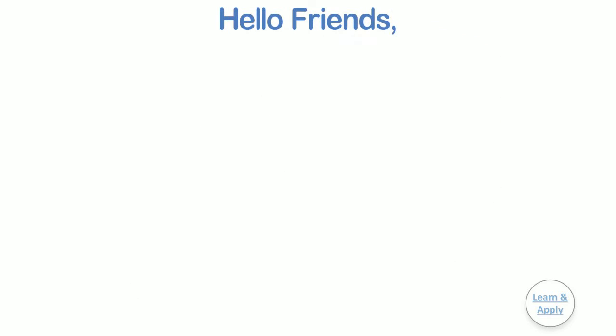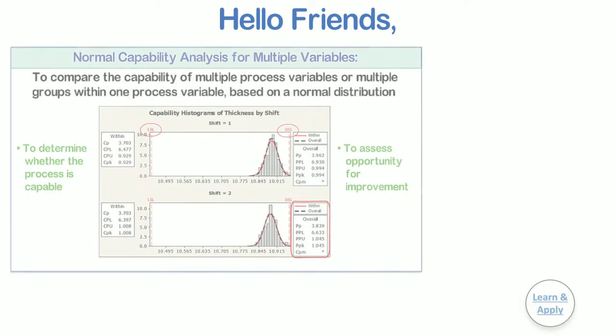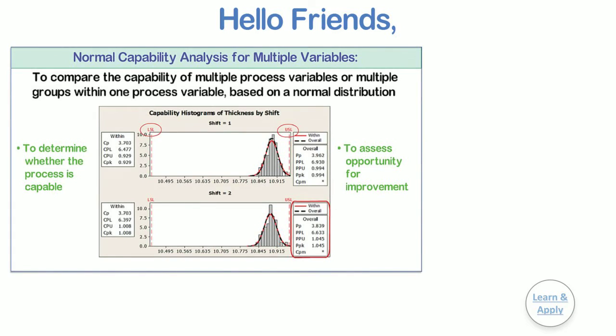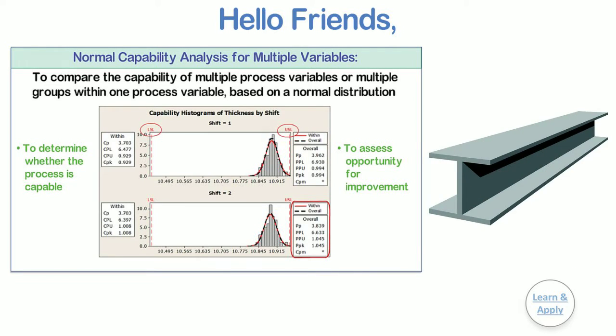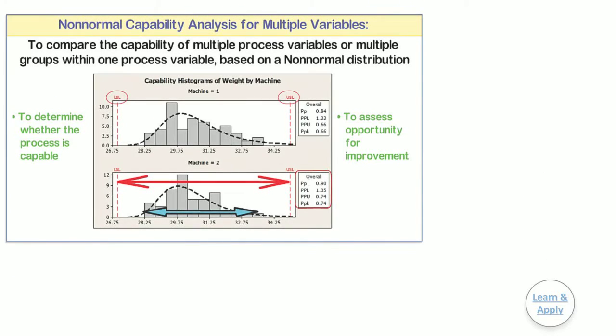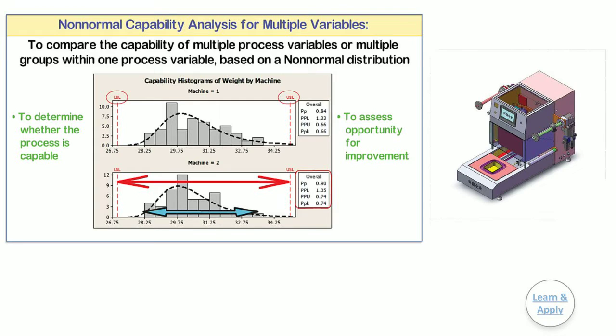Hello friends, in the learning of capability analysis, we had seen normal capability analysis for multiple variables with practical example in the last video. This video is about the 5th part of capability, non-normal capability analysis for multiple variables. We are going to learn this part of capability analysis with practical example for easy understanding and better clarity. So let's begin.